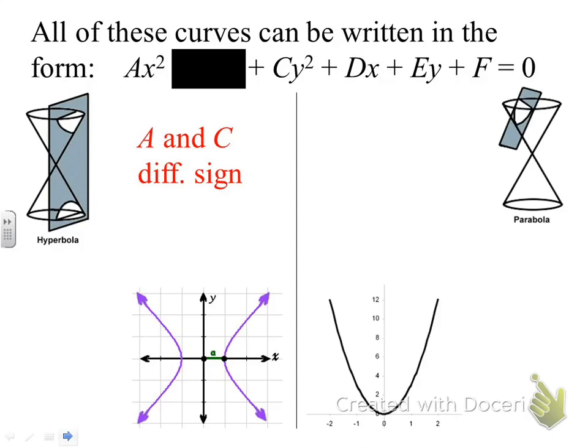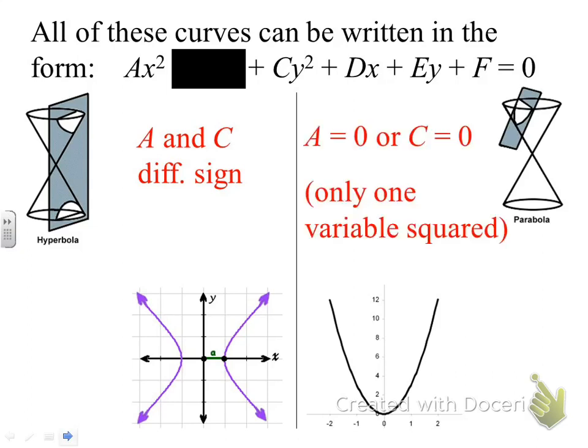For a parabola, you guys know what the graph of that looks like—we did those in chapter 5 that we just finished. To know that we're dealing with a parabola, either the A coefficient will equal 0 or the C coefficient will equal 0. In other words, there will be only one squared variable in the equation.